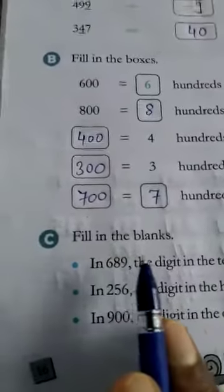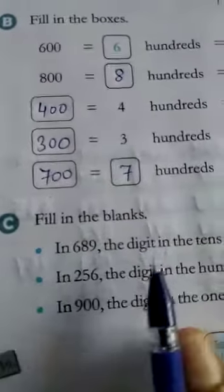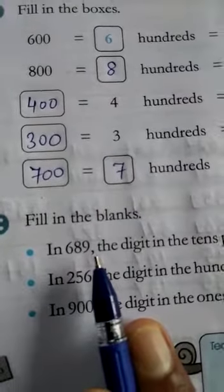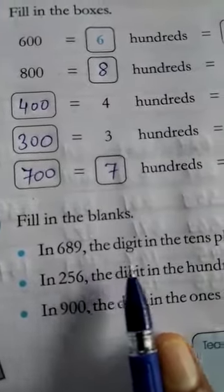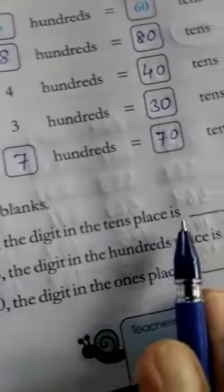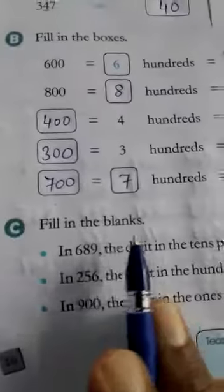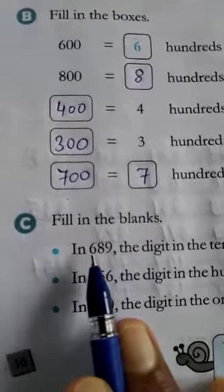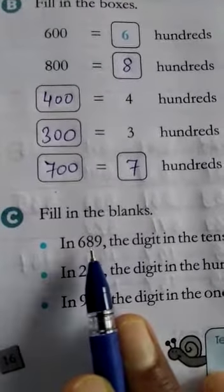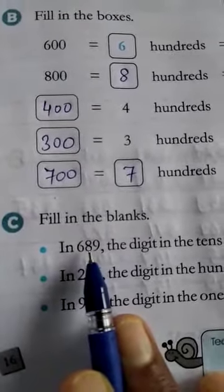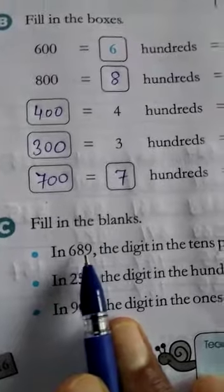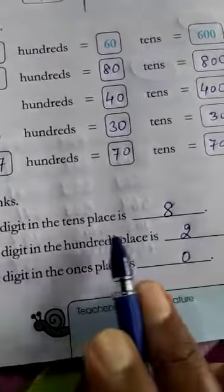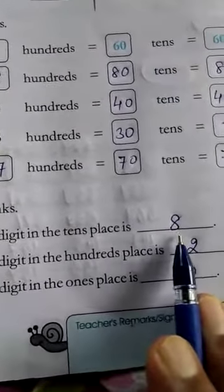Question number C: Fill in the blanks. In 689, the digit in the tens place is — counting from the right: ones, tens, hundreds — so the digit at the tens place is 8. Your answer will be 8.